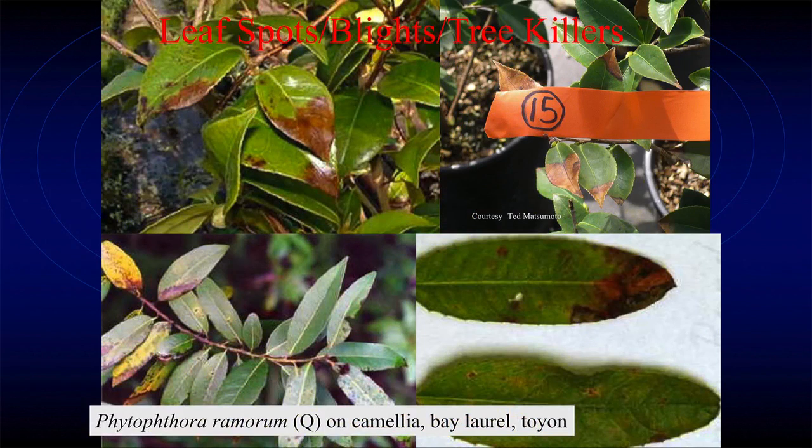Phytophthora ramorum sort of has a plant factor - it loves bay laurel. It makes zillions of little spots, and there are zillions of spores in those spots. Whenever you've got a bay laurel, it doesn't really hurt the bay laurel very much, but the spots go off onto the oaks and tan oaks and kill them - it's sort of like a plant factor there, blowing off in the wind or moving with rain onto other plants. This is the diseased part where a spore landed and caused the disease, and this is the healthy part.